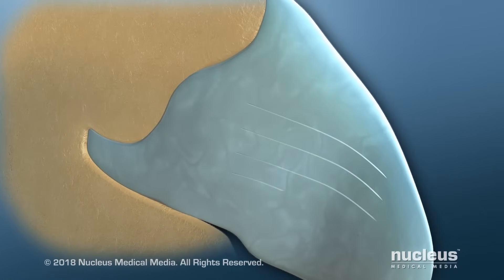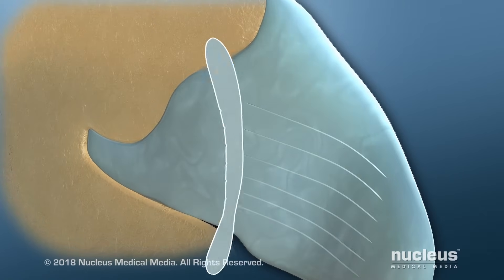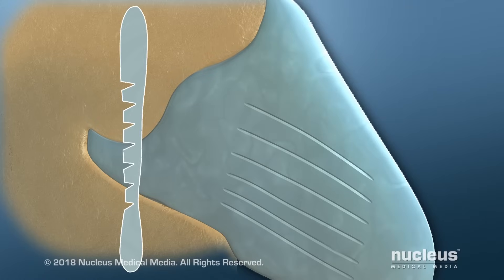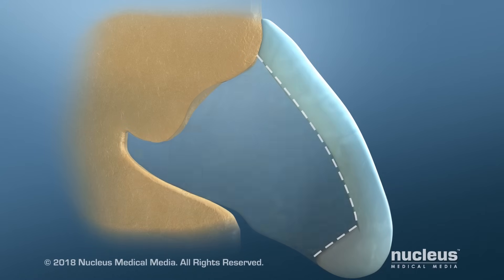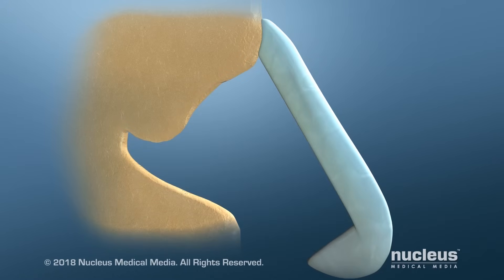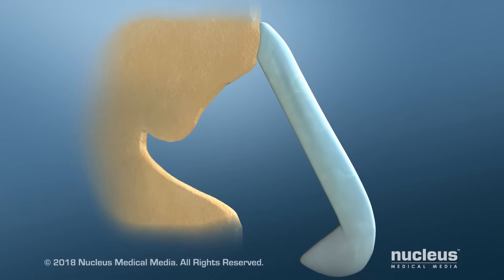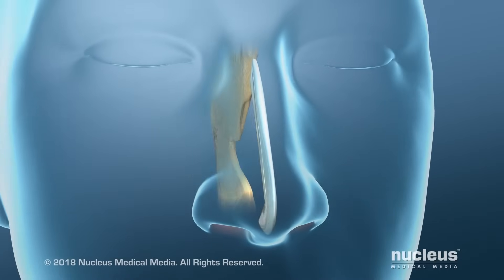To straighten the septum, the surgeon may make a few cuts in the cartilage to relax it. Sometimes, the bent part of the septum may need to be removed. Your surgeon will leave behind enough cartilage to support your nose.